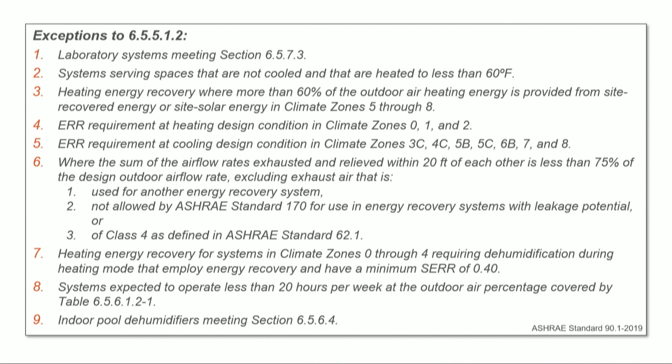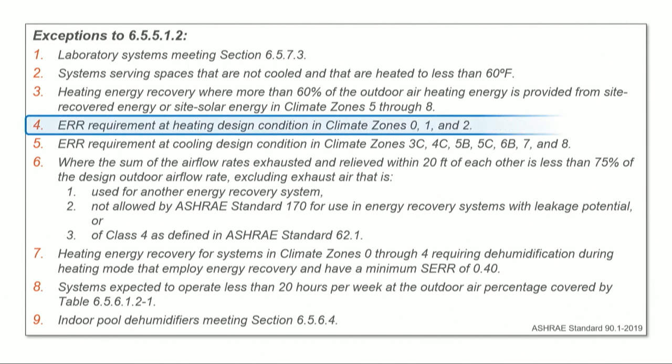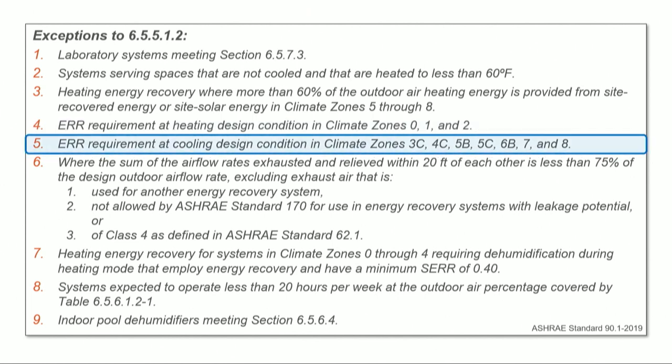Here is a list of exceptions for this section. Exceptions 4 and 5 address climate-specific conditions: in the warmest climate zone, the energy recovery system does not need to meet the 50% enthalpy recovery ratio at heating design conditions, only at cooling design. In colder and drier climates, the 50% ratio need only be met at heating design conditions, not at cooling design. A good reference for the other exceptions is the Standard 90.1 user's manual, which ASHRAE publishes to accompany the standard.